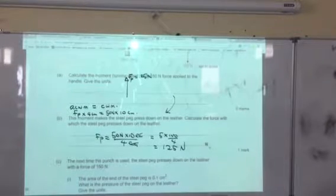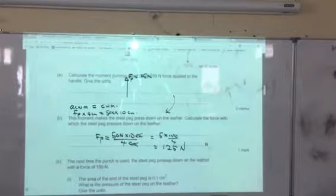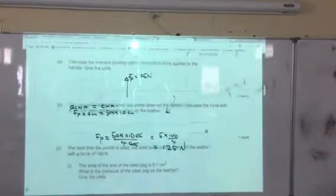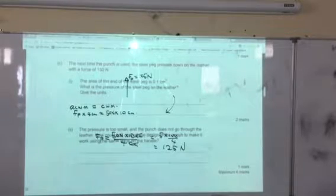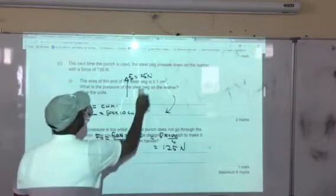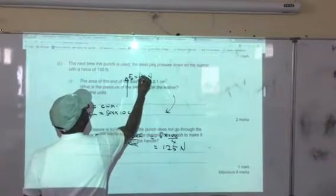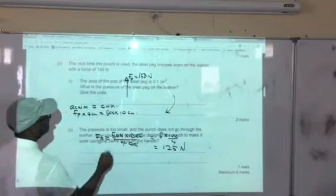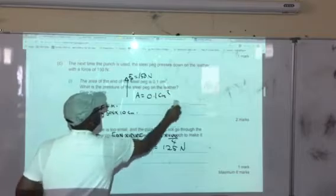The next question says the next time the punch is used, the steel peg presses down on the leather with a force of 150 newtons. So we are changing Fp to 150. The area of the end of the steel peg is 0.1 centimeters squared.